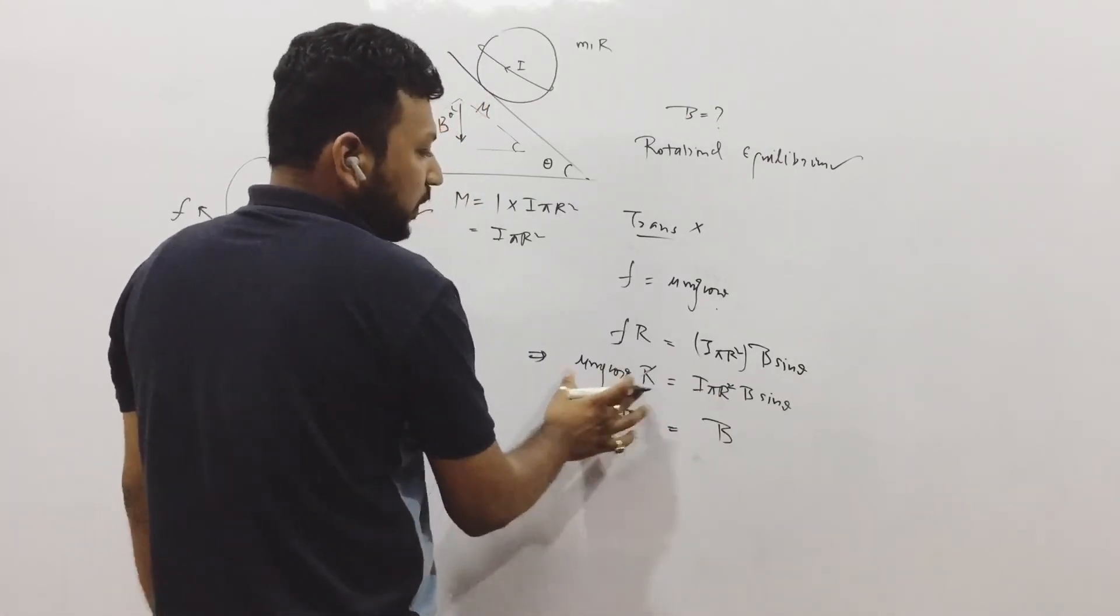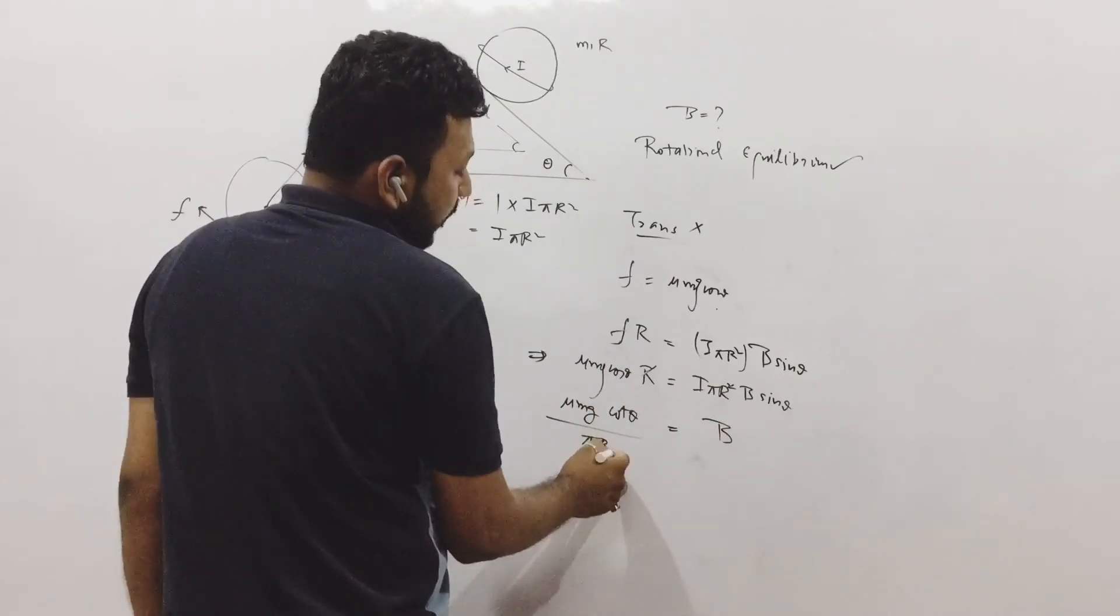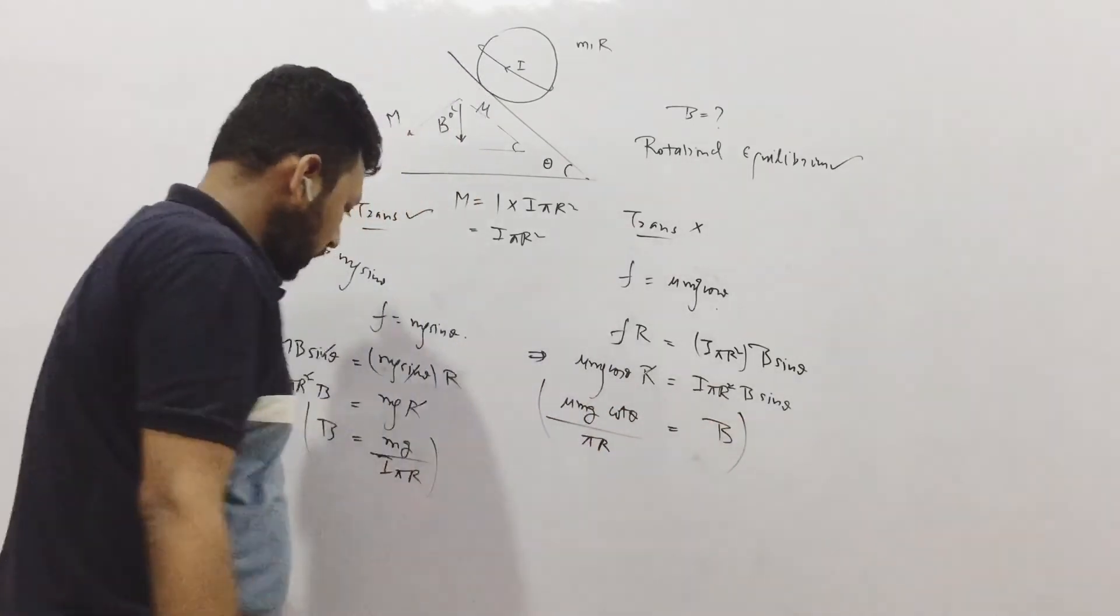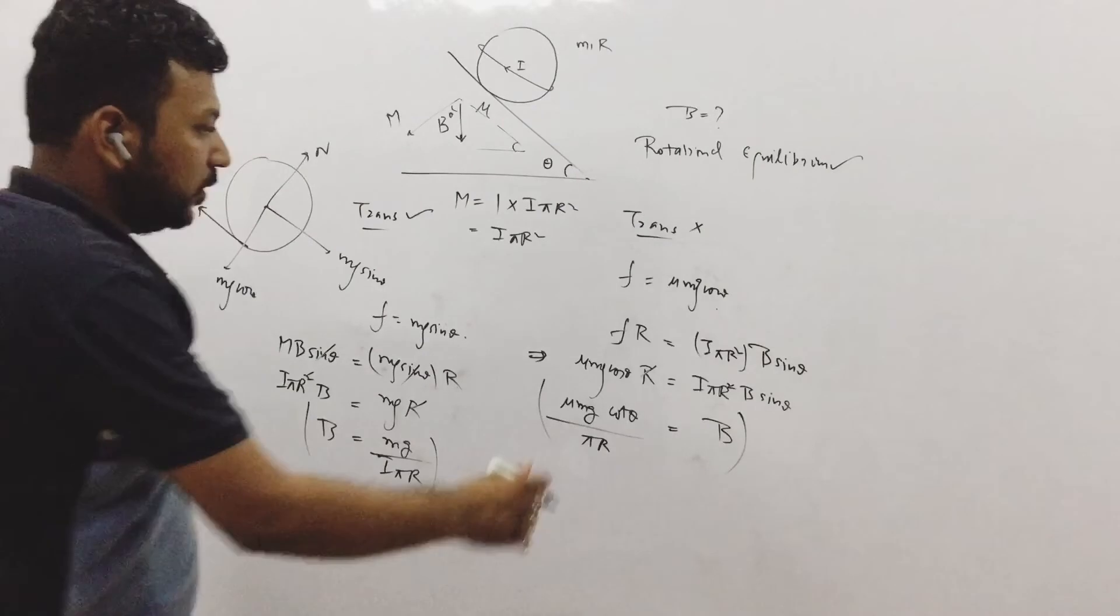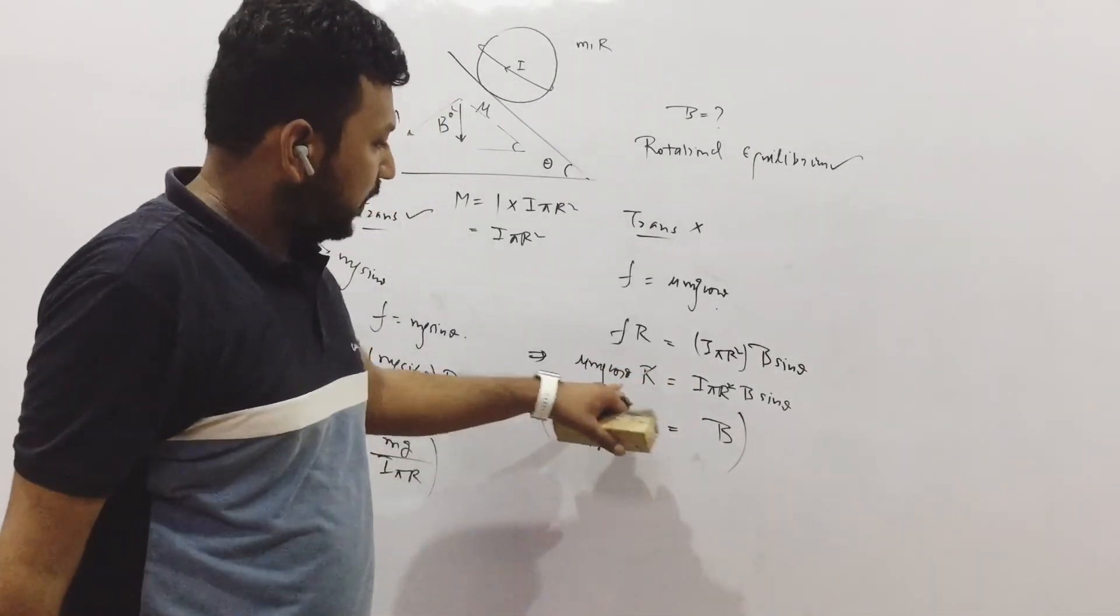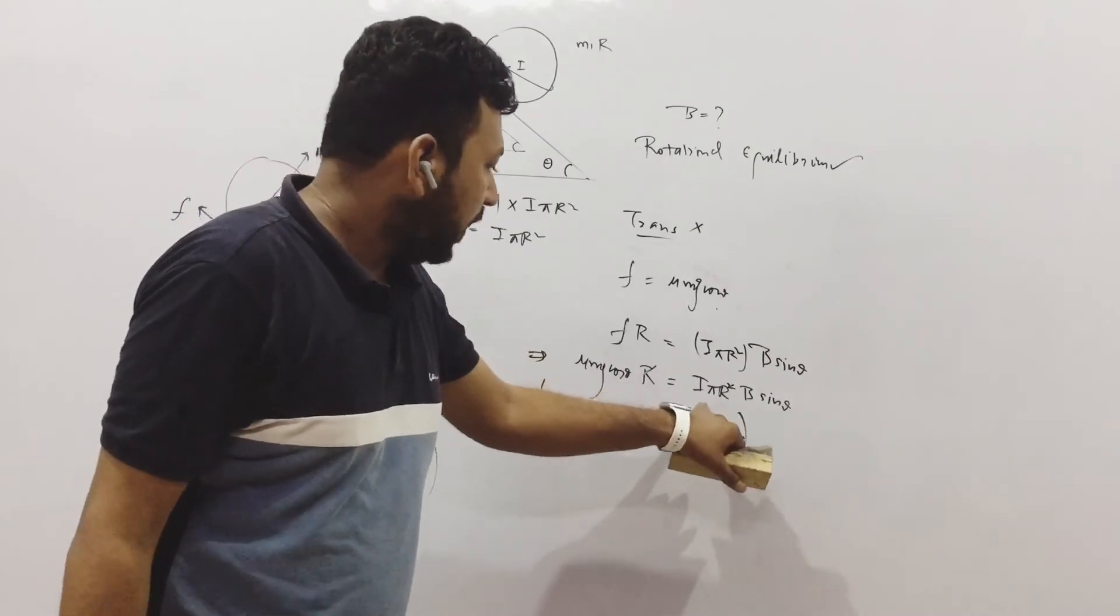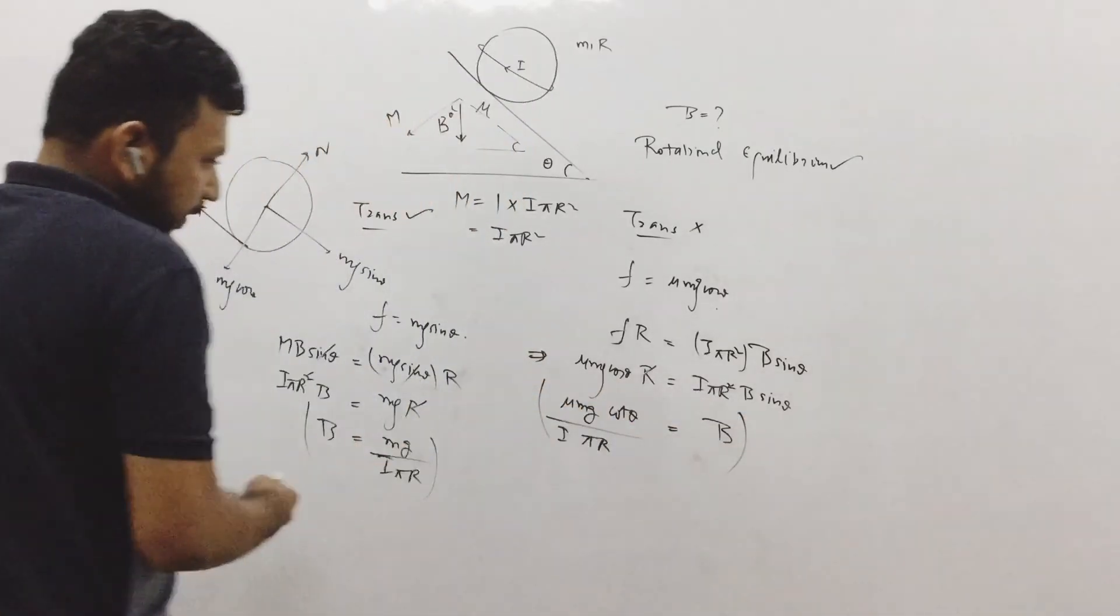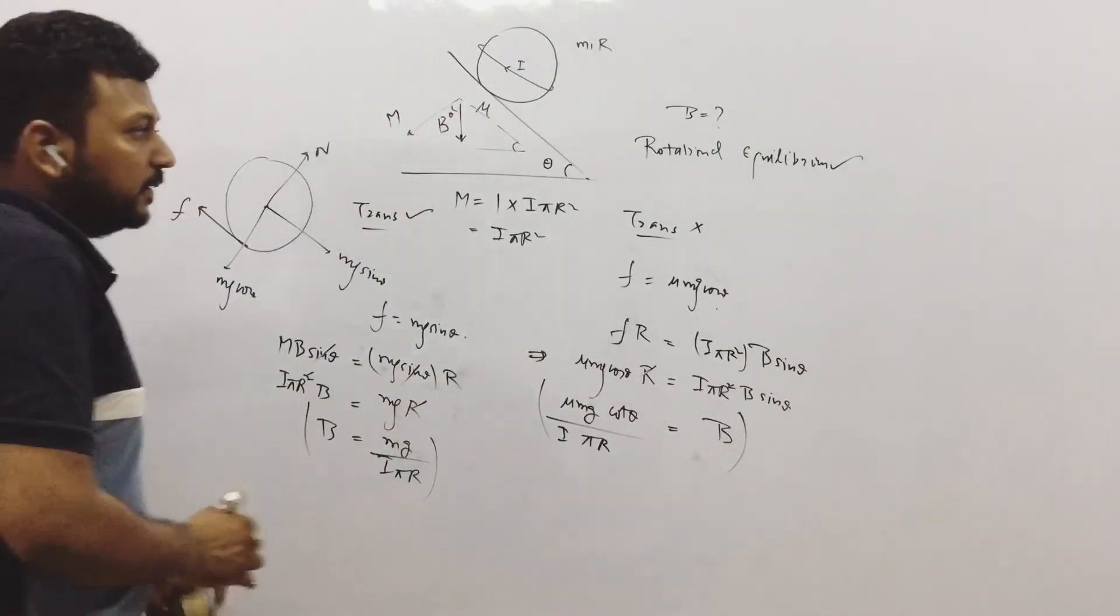mu Mg cos theta upon I pi R. So dimensionally I think both are coming as same.